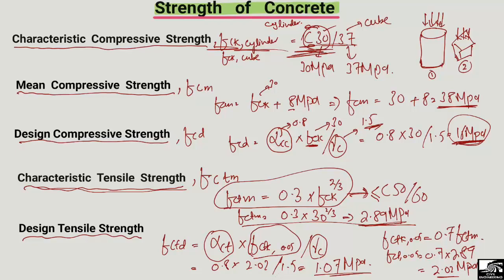So for concrete class C30/37, the characteristic compressive cylinder strength is 30 MPa. These are the different strengths of concrete, and you should know how to find each value. These strength values are used in our design equations to design structural members. Hope you guys understand — don't forget to subscribe for daily civil engineering videos. Thank you for watching.